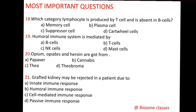Question number 19: Humoral immune system is mediated by — B cells, T cells, NK cells (natural killer cells), or mast cells. The correct answer is B cells. 'Humoral' means liquid, and B cells are responsible for antibody production. Immunity acquired through antibodies is called humoral immunity.